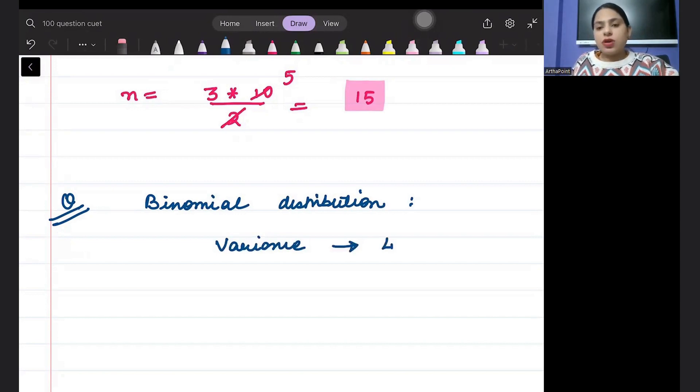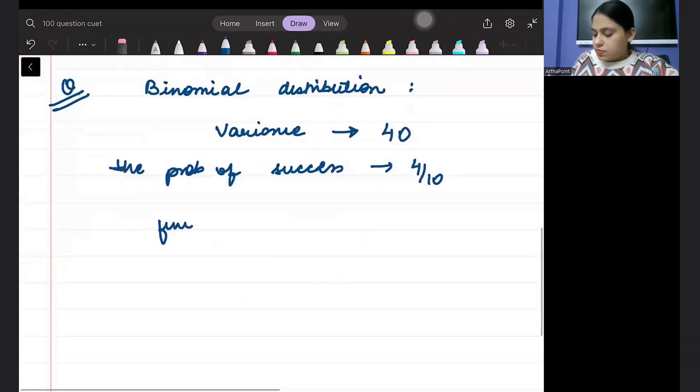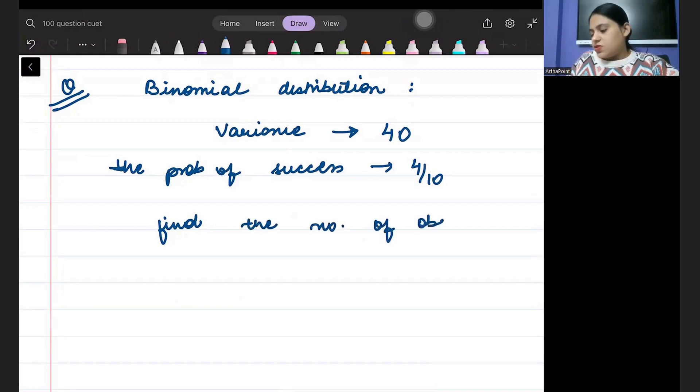let it be say 40. And the probability of success, let that be 4 by 10. Find the number of observations.